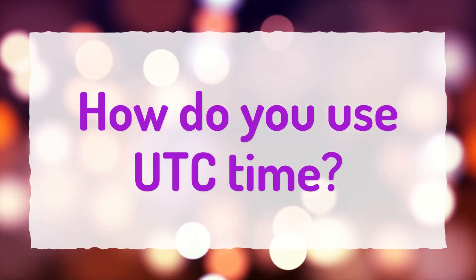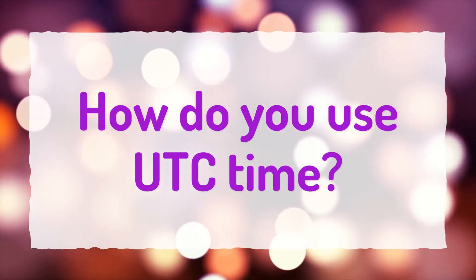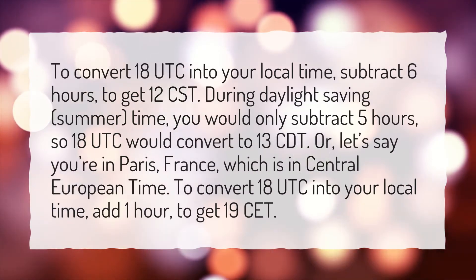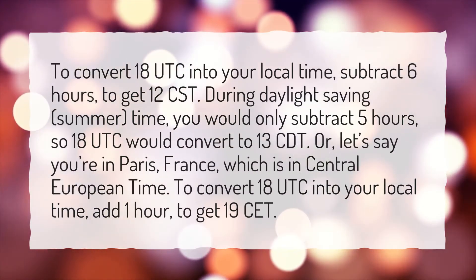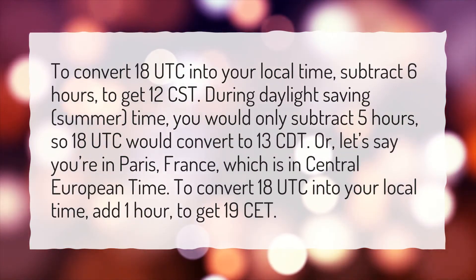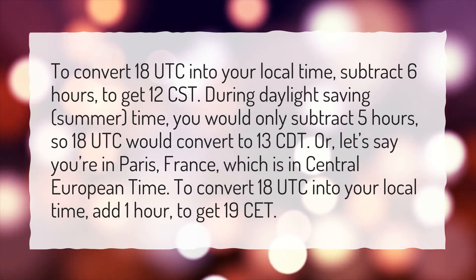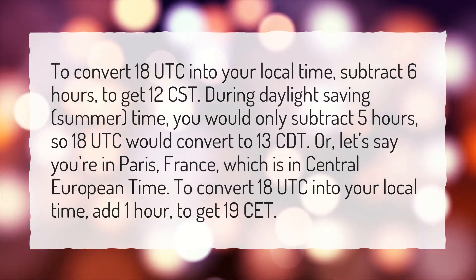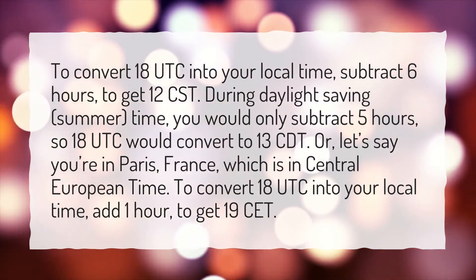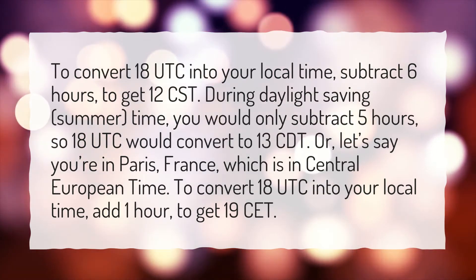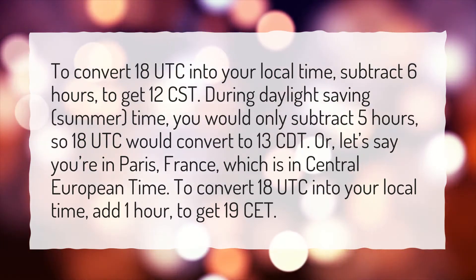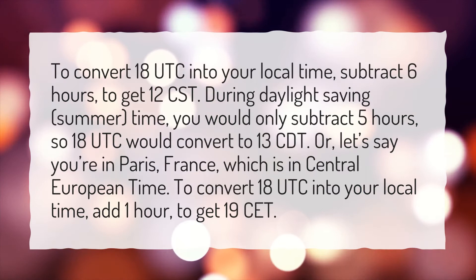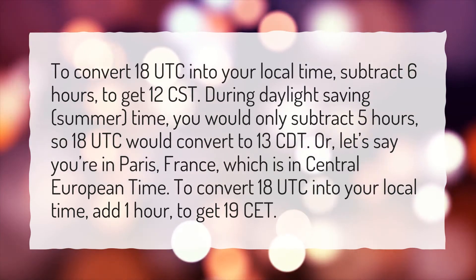How do you use UTC time? To convert 18 UTC into your local time, subtract 6 hours to get 12 CST. During Daylight Saving time, you would only subtract 5 hours, so 18 UTC would convert to 13 CDT.